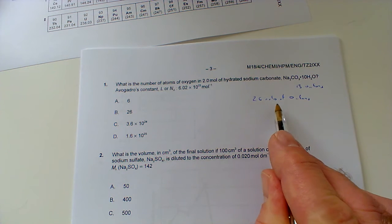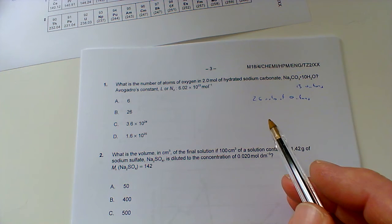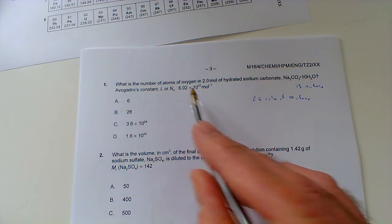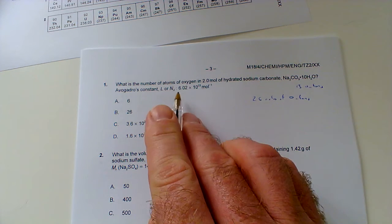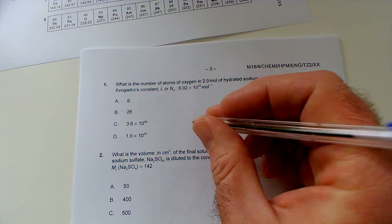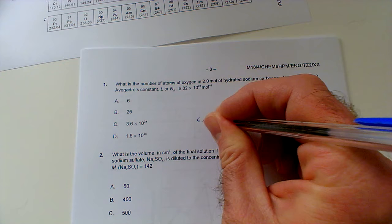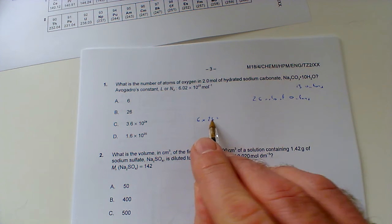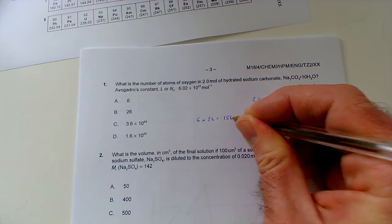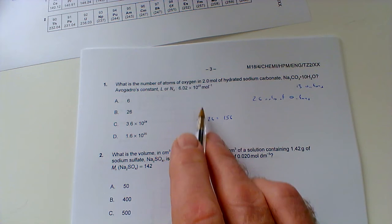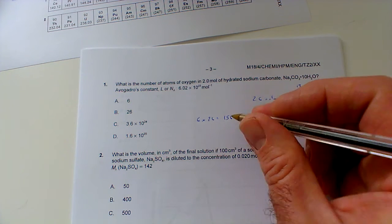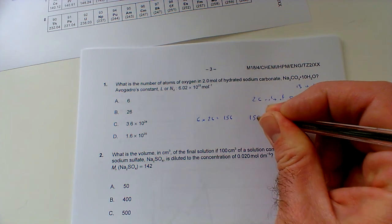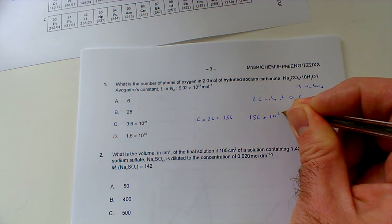And of course we've got 2 moles of this, so we're going to have to double that. So that's 26 moles of oxygen atoms. Okay, if there's 26 moles of oxygen atoms in 2 moles of this, then we need to multiply this by the Avogadro constant. So basically that's 6 times 26, that's 6 times 20 is 120 plus 36, that'd be 156. But it's not actually 6 times 26, it's 6 times 10 to the 23, so it's actually 156 times 10 to the 23.